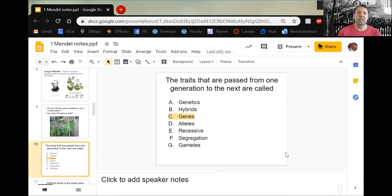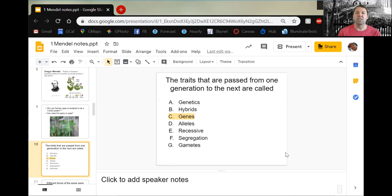Another quiz question. Which traits that are passed from one generation to the next are called genes? The answer would be genes here. The study of that pattern of inheritance would be called heredity or genetics. How about different forms of the same gene? This would be alleles. The alleles would be like a big T for tall, little t for short. A big P for purple flower, little p for white flower. Those are different forms of the same gene - their dominant recessive. We call those different forms alleles.